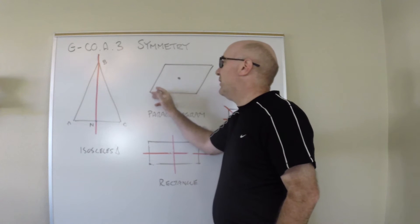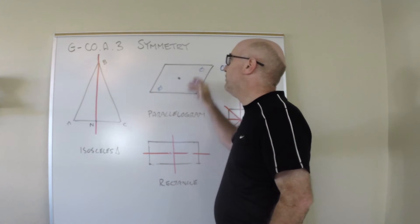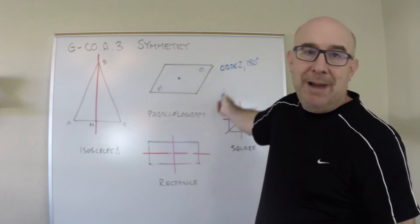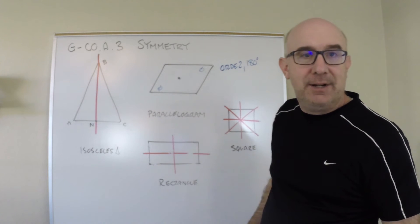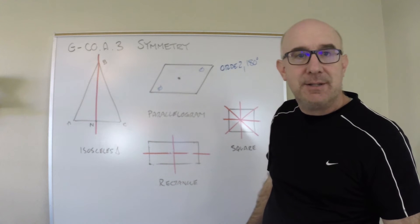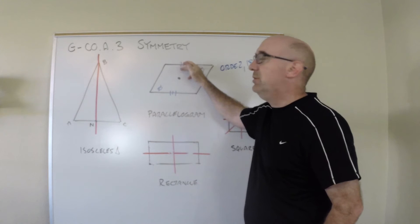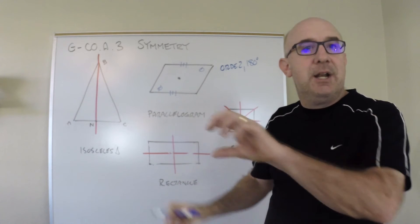If you know that this has an order of 2, it's guaranteed that this angle will map onto the other angle. That's what symmetry means. It's also true that this side here would map to its opposite side in a rotation of 180 degrees because we know that that order produced a mapping onto itself.